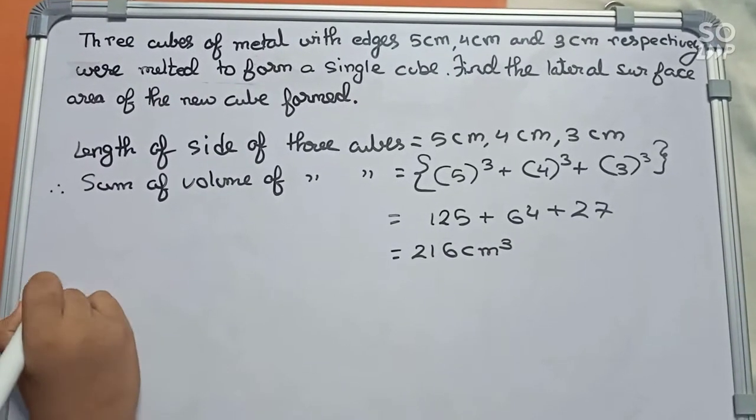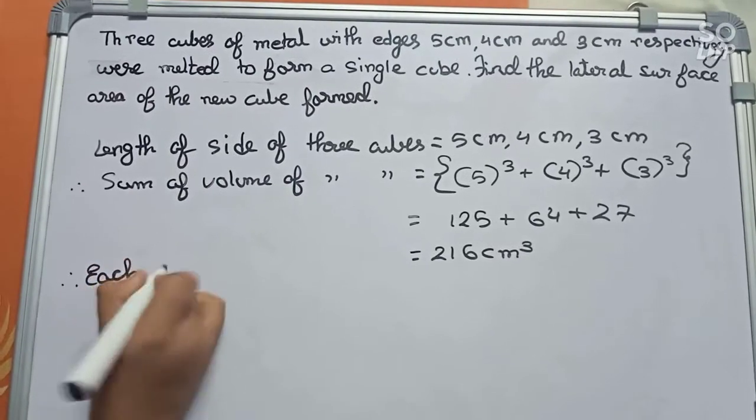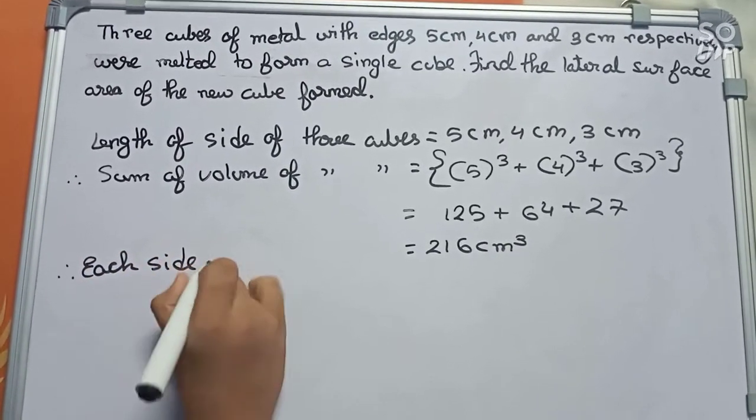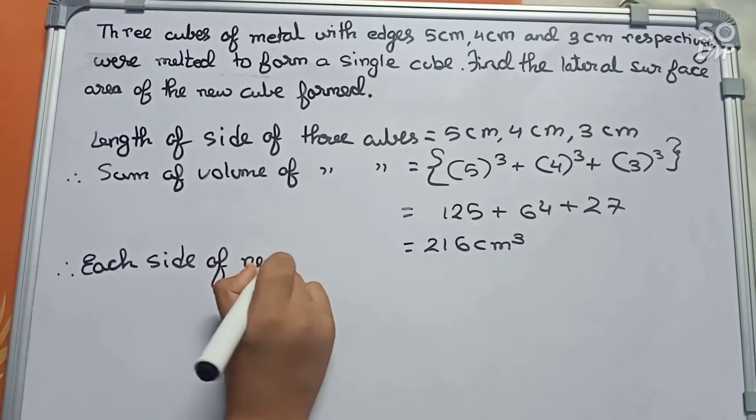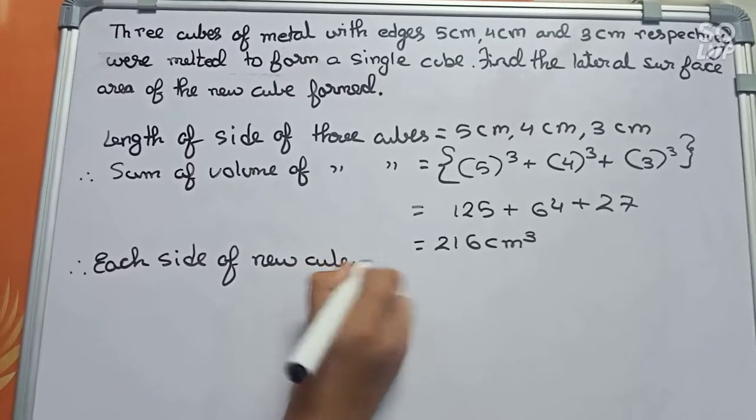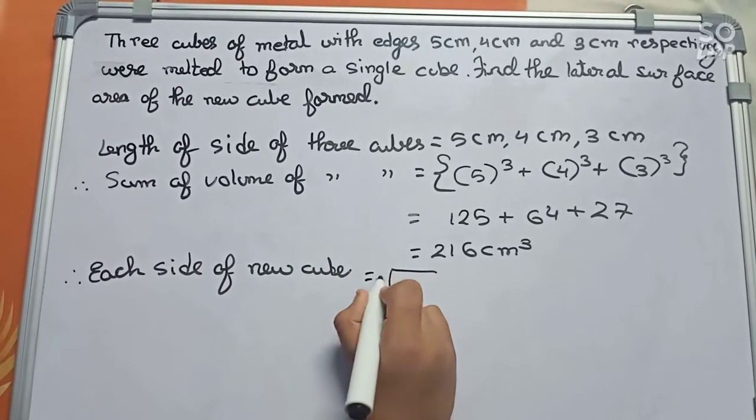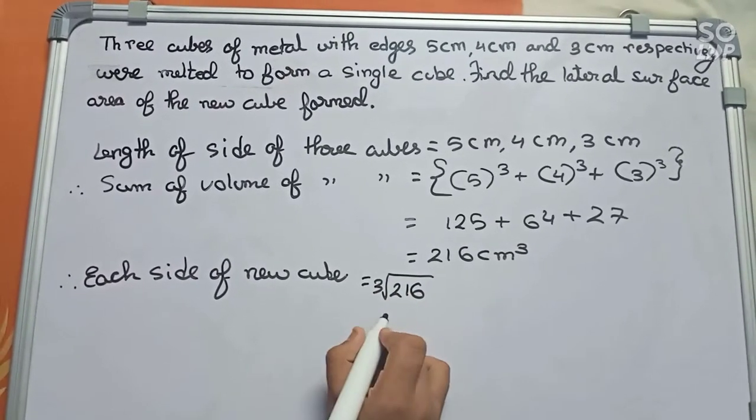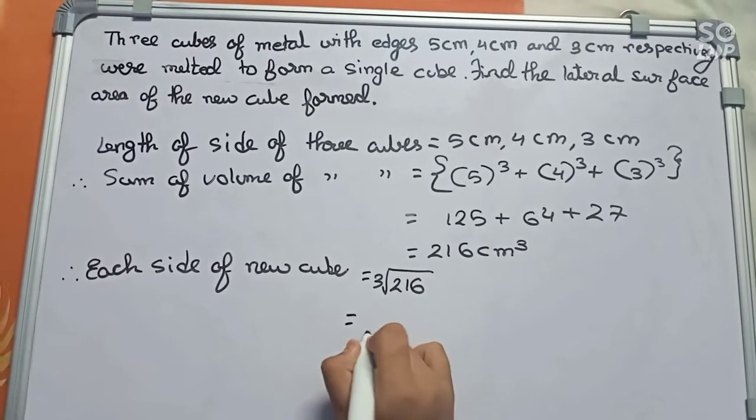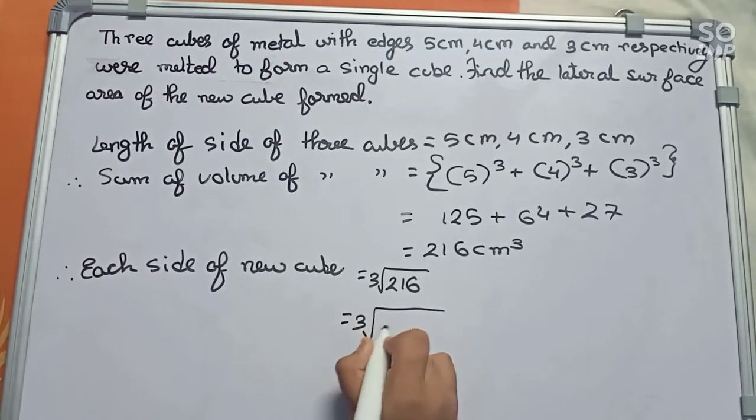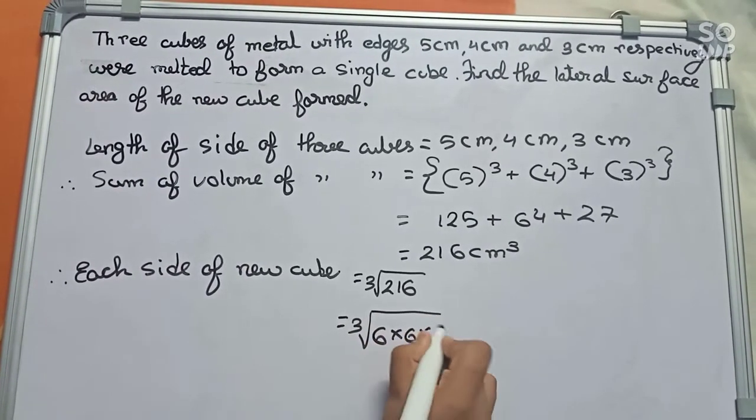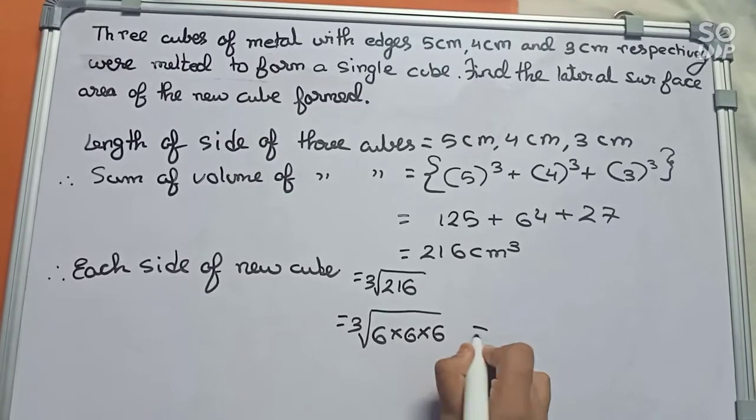Now we'll find the each side of new cube, so it will become cube root of 216. If we factor it, it will become 6 into 6 into 6, so it will become 6 centimeters.